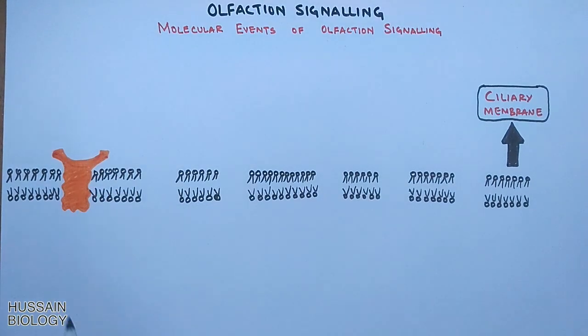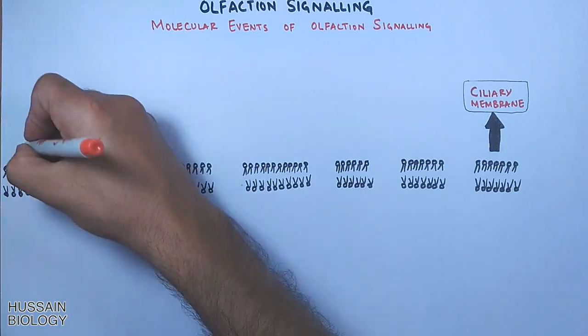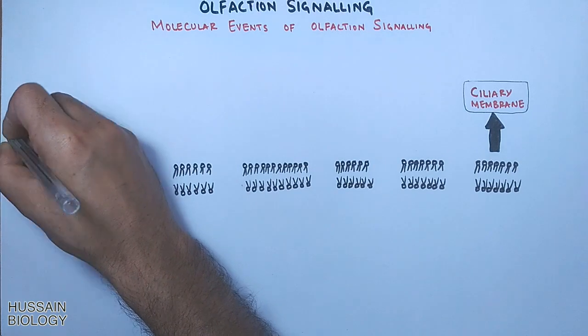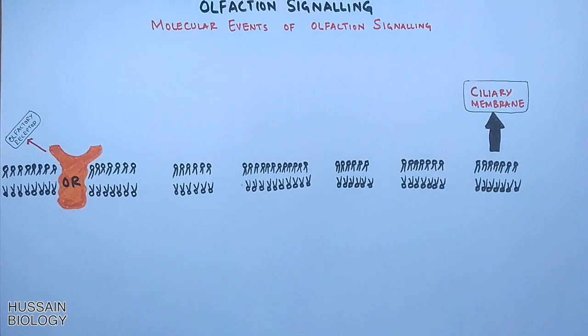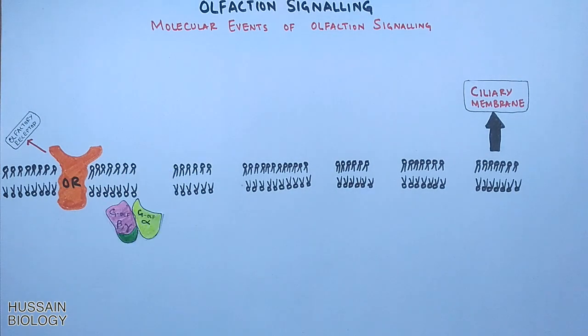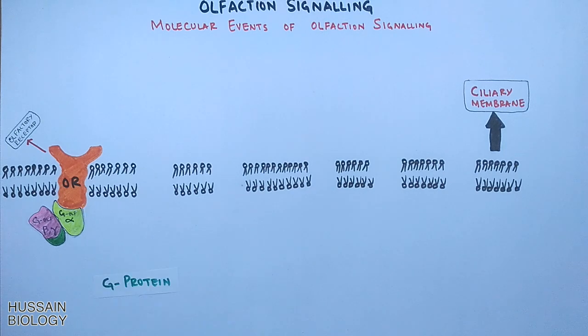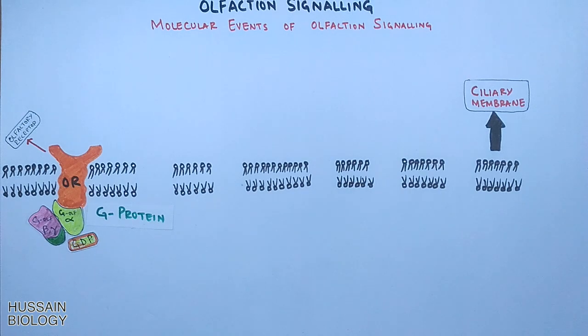We have the olfactory receptor protein which receives the signaling molecule. To this olfactory receptor, the G protein is bound having three subunits: alpha, beta, and gamma. This G protein has GDP bound, which renders it inactive.